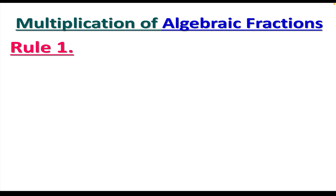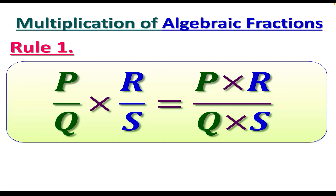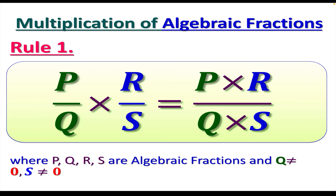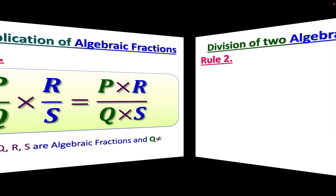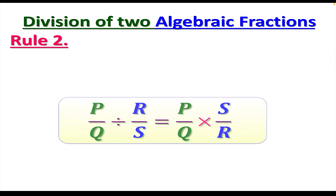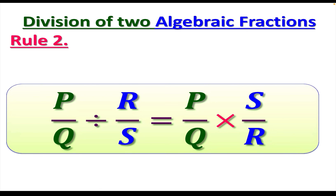Let's move on to operations on algebraic fractions. The first operation is multiplication. Two algebraic fractions can be multiplied together: for P over Q times R over S, you multiply the numerators straight across and multiply the denominators straight across, just as you would with normal fractions — provided that Q and S are not equal to zero.